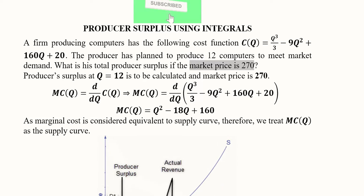This is the given data that we can extract and with the help of this data we can find the producer surplus. This is the cost function and here we calculate the marginal cost function by using the derivative of the cost function.